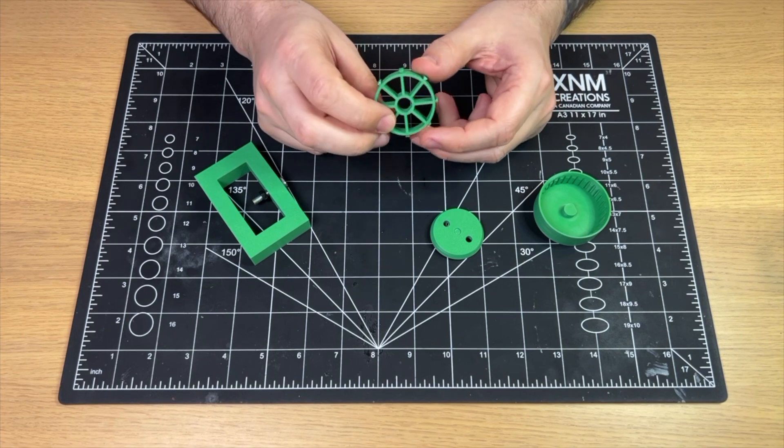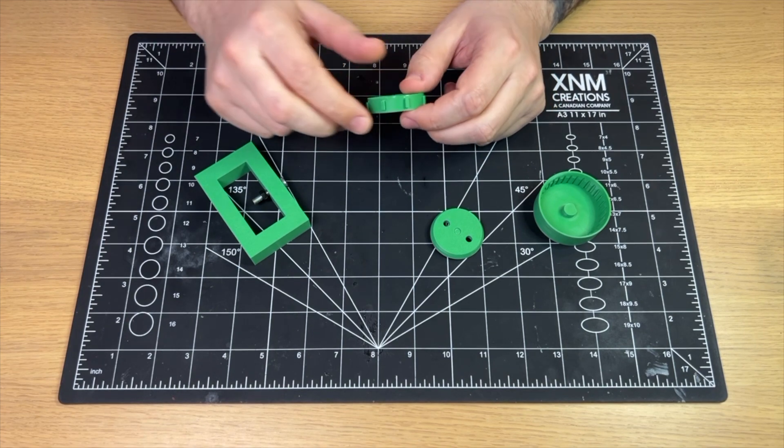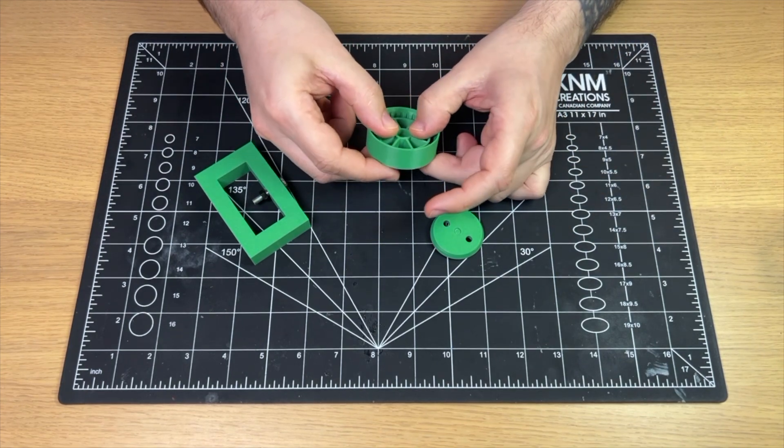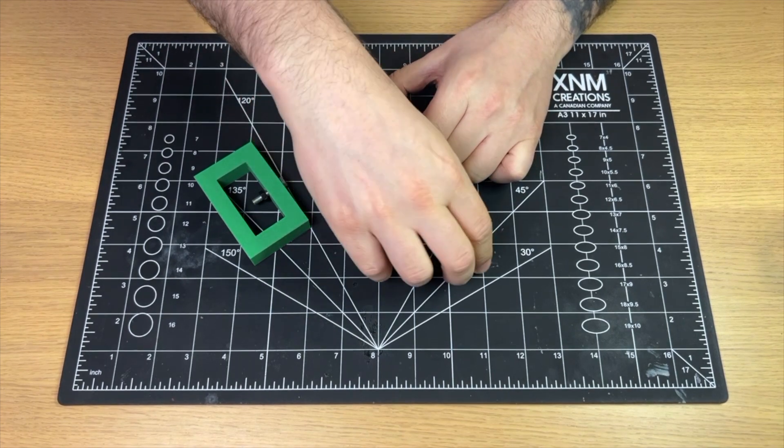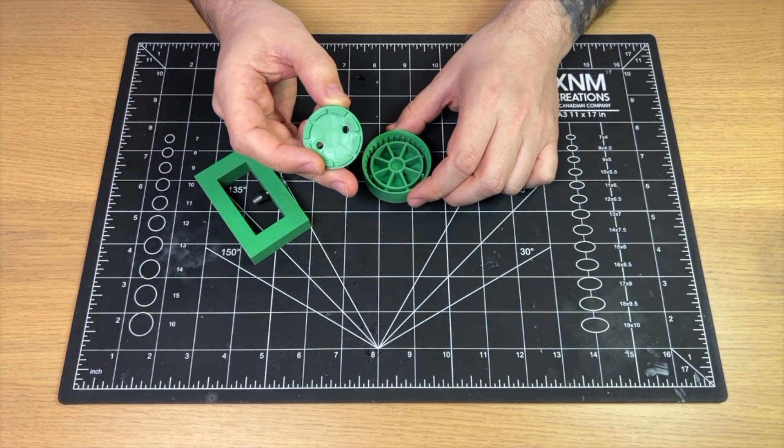I have already printed all the necessary parts. You can find the links to the 3D models in the video description. I'll start by assembling the mold for the tire casting. First, I'll insert the rim into the form. Next, I'll add clamping plate over the rim.